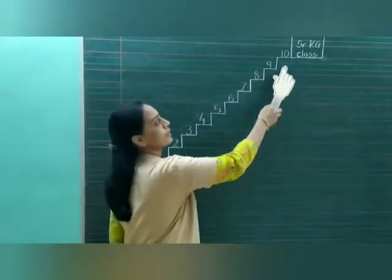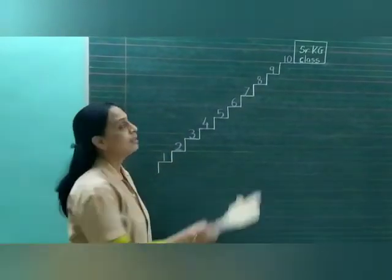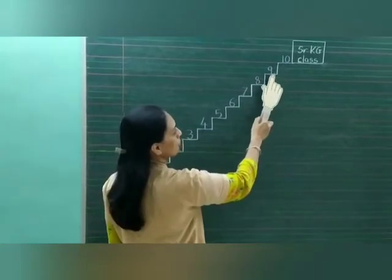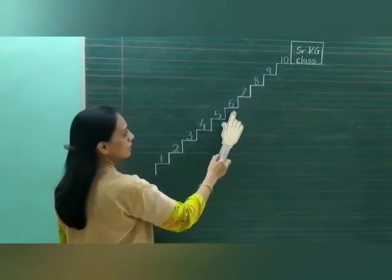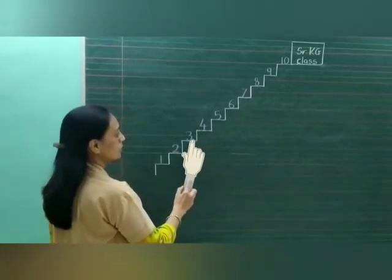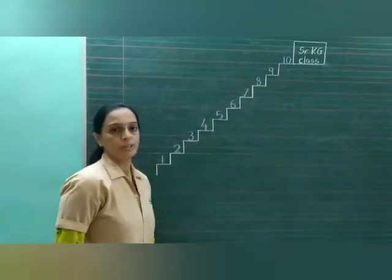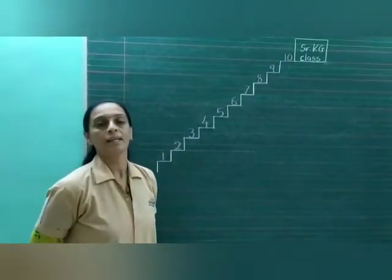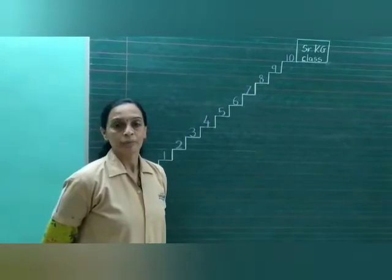And when we come back, we counted the numbers backwards — that means in reverse order: 10, 9, 8, 7, 6, 5, 4, 3, 2, 1. So this counting of numbers backwards will help us understand the new concept of 'before' numbers.